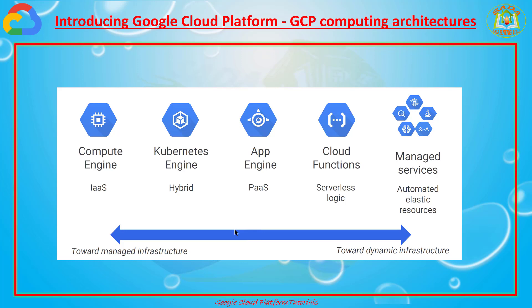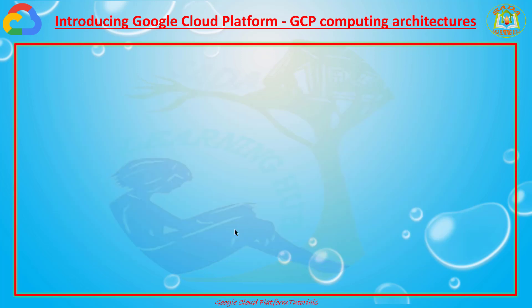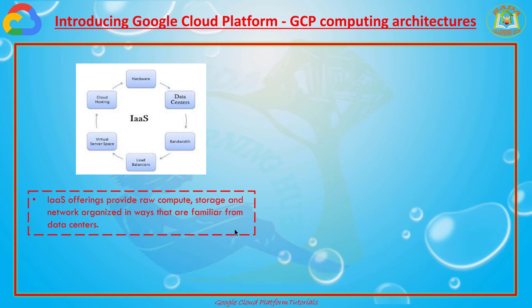Now I am going to dig into what exactly IaaS and PaaS mean. Virtualized data centers brought infrastructure as a service and platform as a service. Infrastructure as a service provides raw compute, storage, and network, organized in a way familiar from data centers — managing hardware, virtual server spaces, load balancers, cloud hosting, data centers, and all those things.